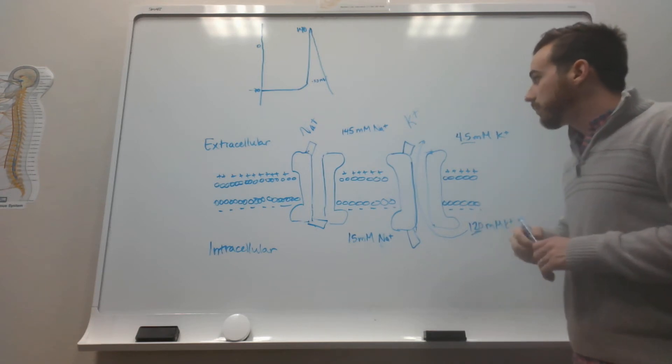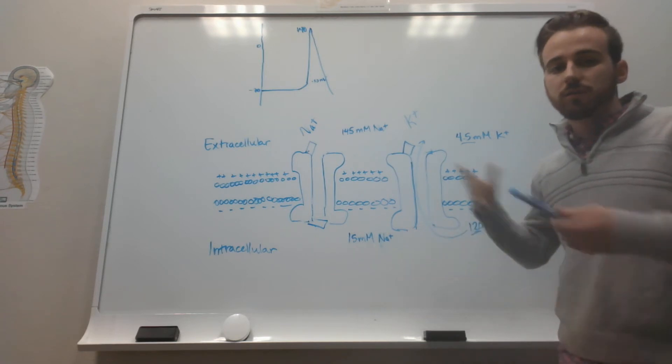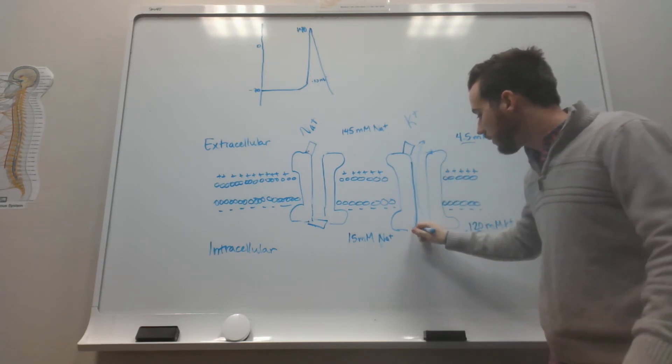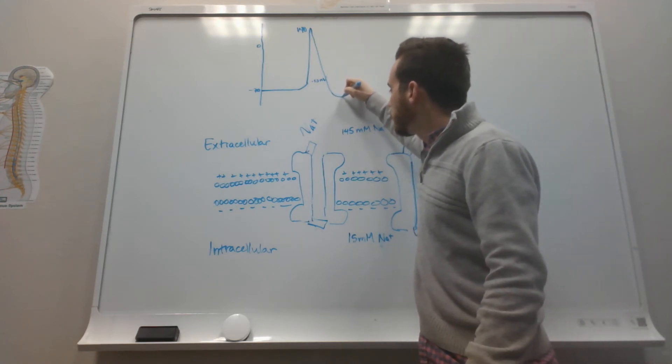It actually gets pretty close because the inactivation gate on potassium, just like everything else about potassium, is slow. And it closes after a little while. So it gets down to negative 80.